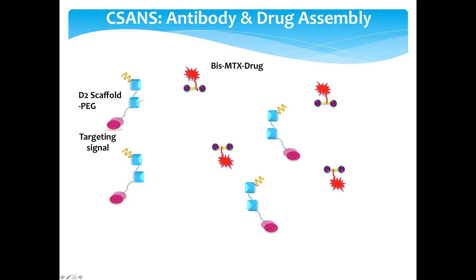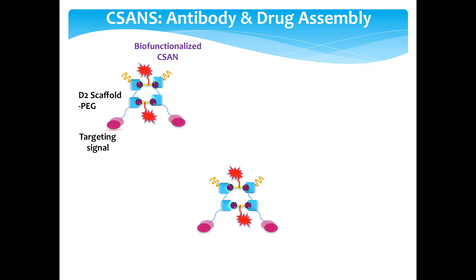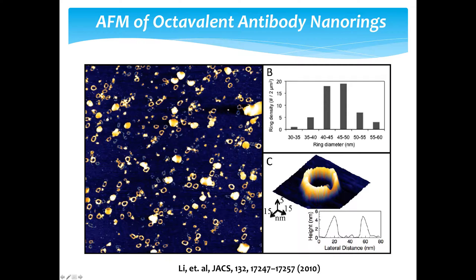If we add our bispecific ligand — like a dumbbell shape — and then a third arm synthesized to carry a drug, radiolabel, or fluorophore, and mix these, we find they self-assemble into nano rings that can now carry our drug or label. This allows us to self-assemble multivalent, targeted, protein-based, biodegradable nanoparticles for drug delivery. Here you see AFM of an antibody nanoparticle — the octameric one — where the single-chain antibody targeting element doesn't interfere with nanoring formation.